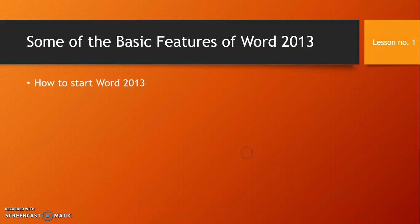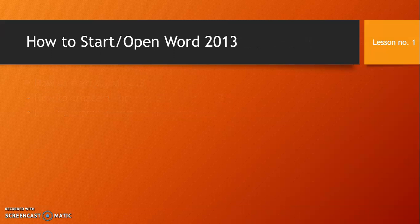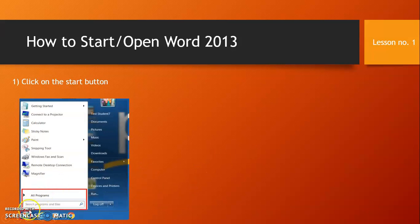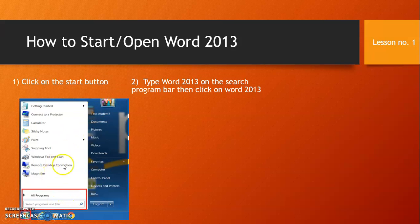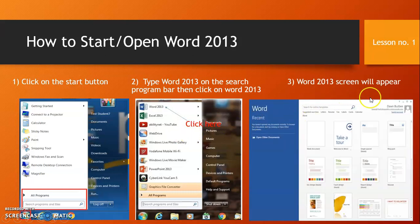Let's see some of the basic features of Word 2013. The first basic feature is how to start Word 2013, how to create a document, and how to save a document in Word 2013. Step one: click on the start button. When you click on the start button, in the search program bar, type Word 2013. A folder will appear with the name Word 2013. Click on it and the Word 2013 screen will appear.